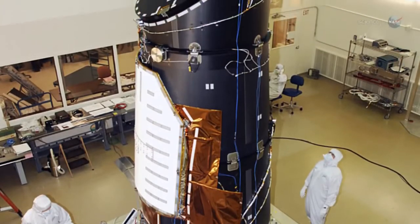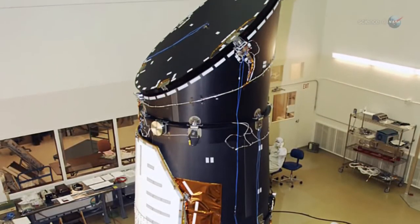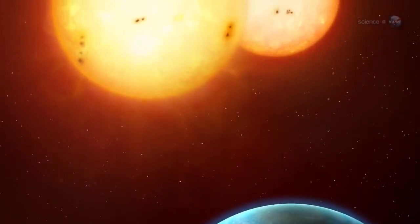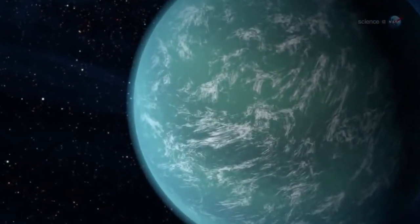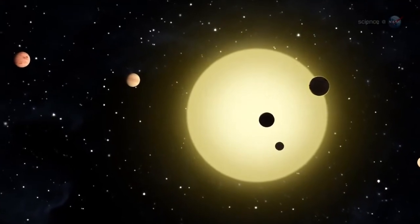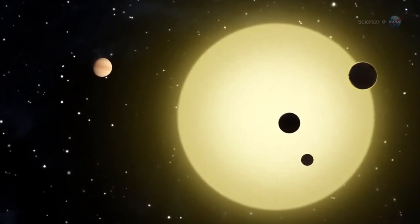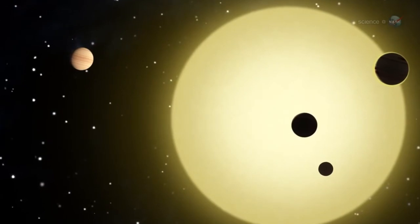NASA's Kepler spacecraft is discovering a veritable avalanche of alien worlds. Recent finds include planets with double suns, massive super-Earths and hot Jupiters, and a miniature solar system. The variety of planets circling distant suns is as wonderful as it is surprising.